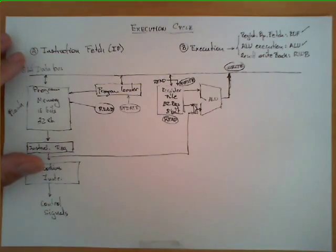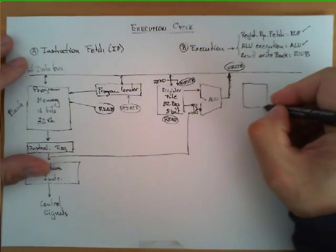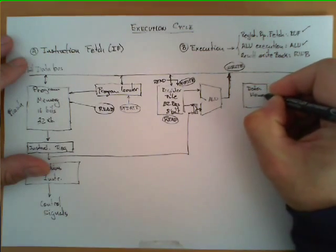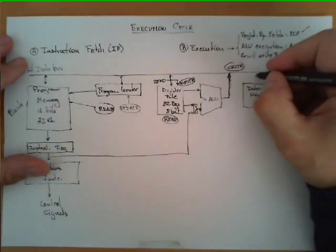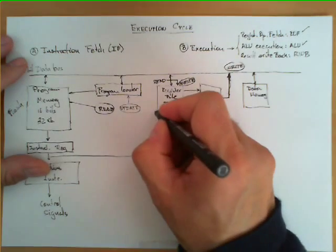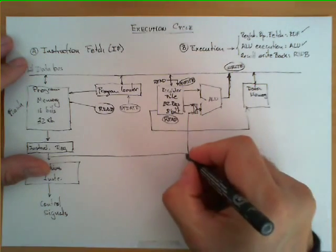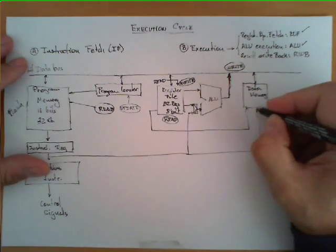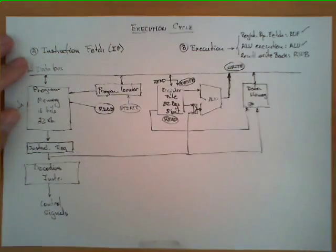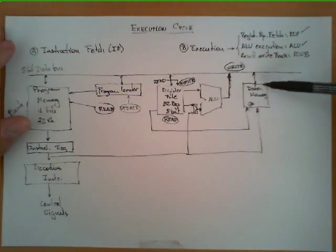Some instructions use the register file; some access the data memory. This data memory is also connected to the bus and may receive addresses from two sources: either the register file, or directly from the instruction. This address is the address of the operation for an instruction that reads or writes from memory.